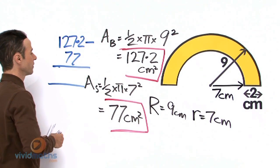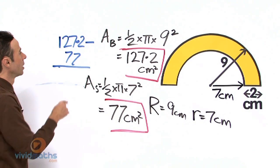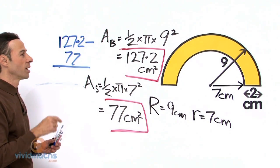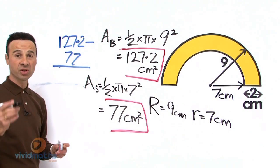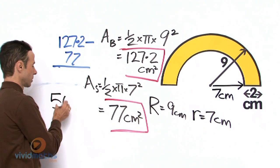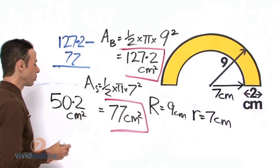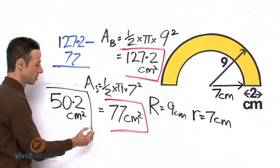OK, that is going to give us a grand total of 127.2 take away 77, which is a grand total of 50.2 cm squared.